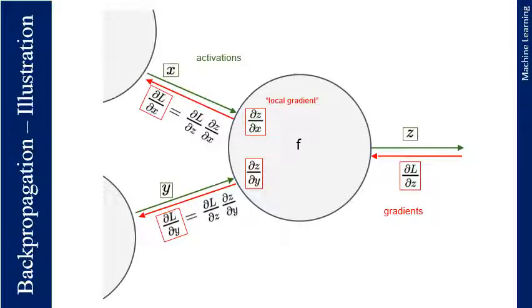The forward pass is represented in green and the back propagation in red. For a particular case, input x and y are fed through an activation function, which feeds to the next layer producing an output, and then the loss is calculated and back-propagated.